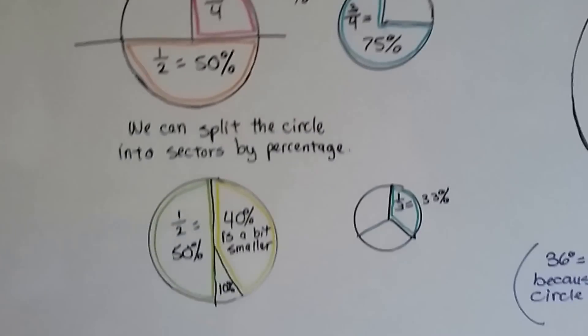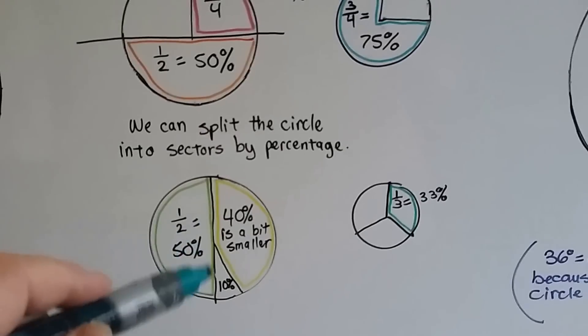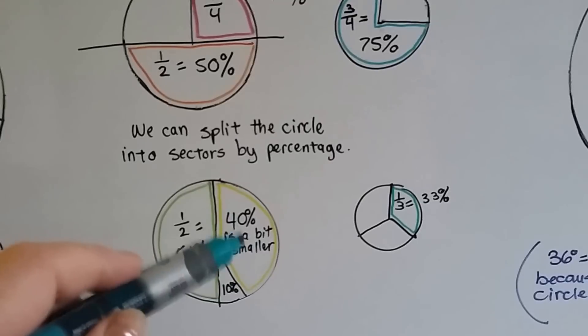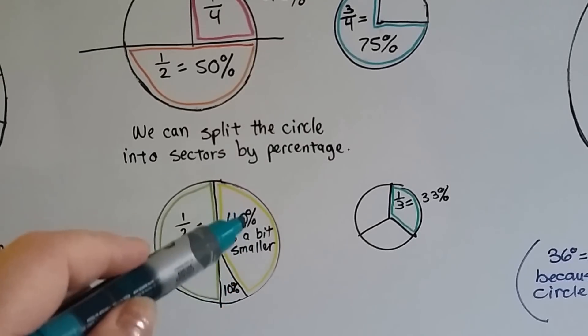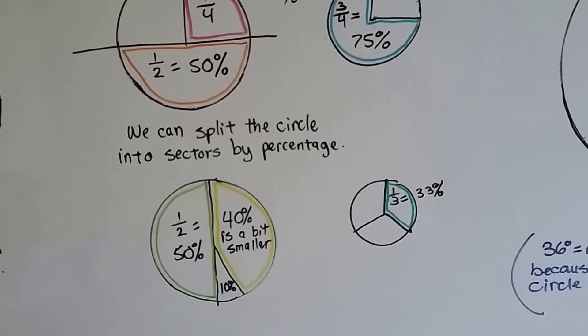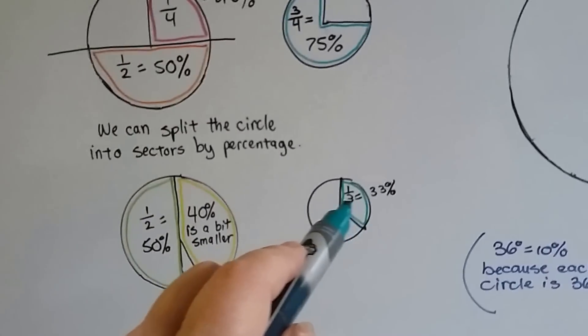It's all part of 100%. Half is 50%, so a little bit less than half would be 40%. And here's the 10% to add to the 40% to make it half, 50%. One-third would be 33%.